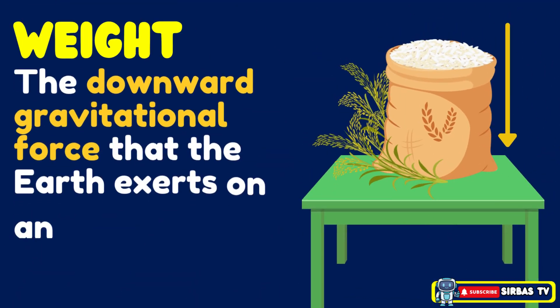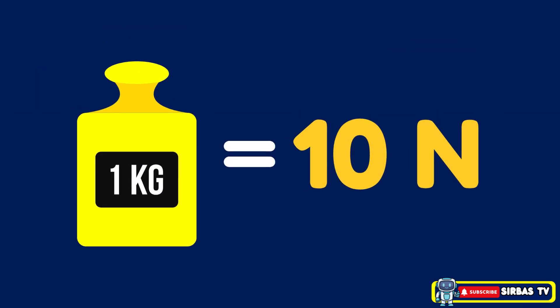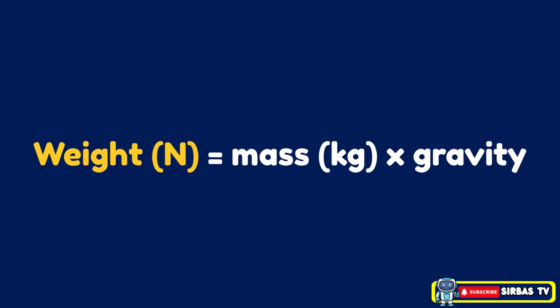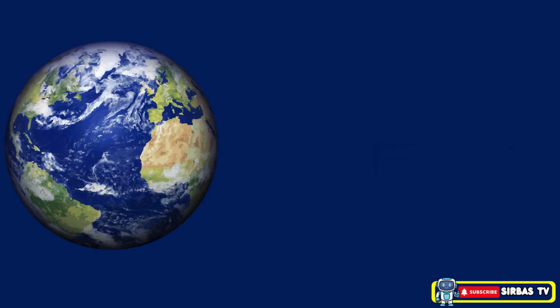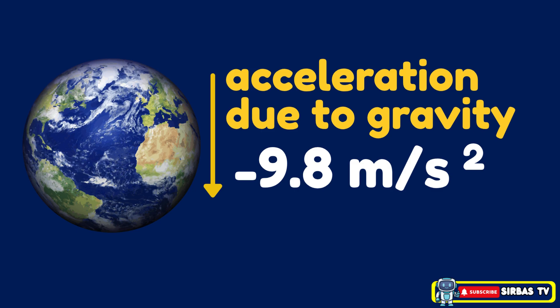Weight is a downward gravitational force that the Earth exerts on an object near or on its surface. For example, an object with a mass of 1 kg weighs about 10 N on Earth. The weight of an object can be calculated using the formula: weight in newtons equals mass in kg multiplied by gravity. On the surface of the Earth, the acceleration due to gravity is approximately 9.8 meters per second squared. The negative sign in some formulas shows that the force is directed downward toward the Earth.